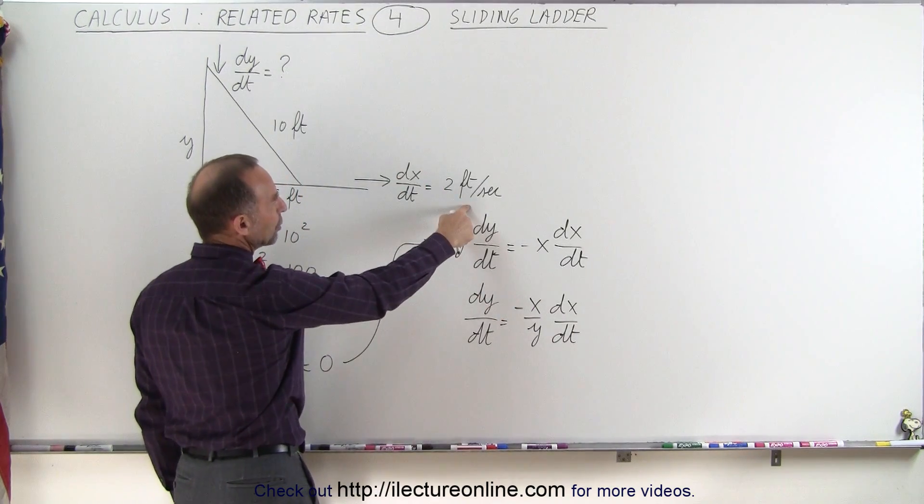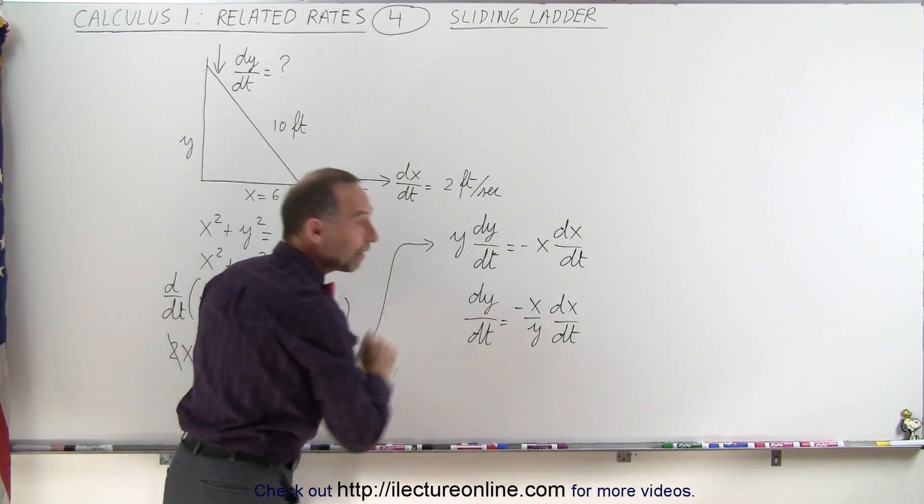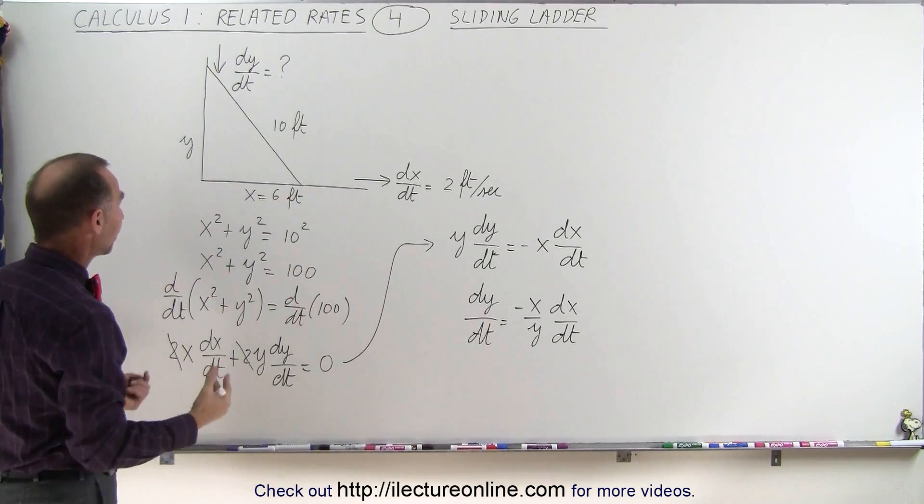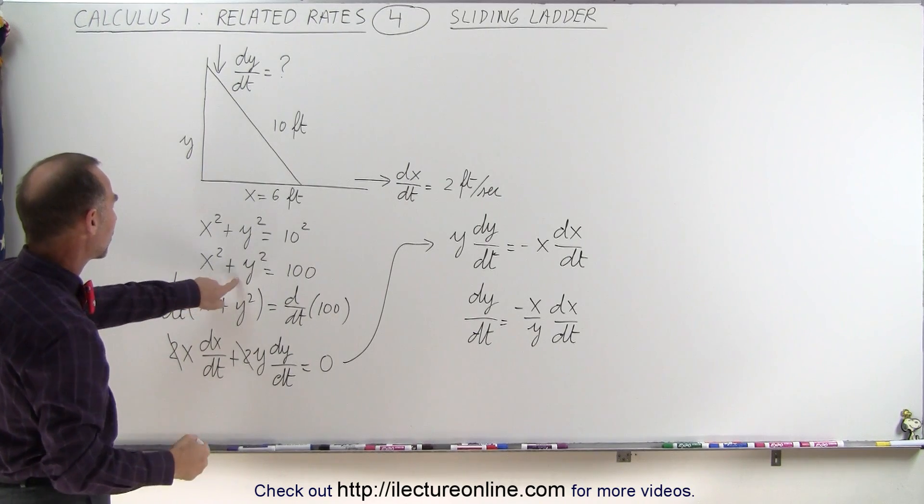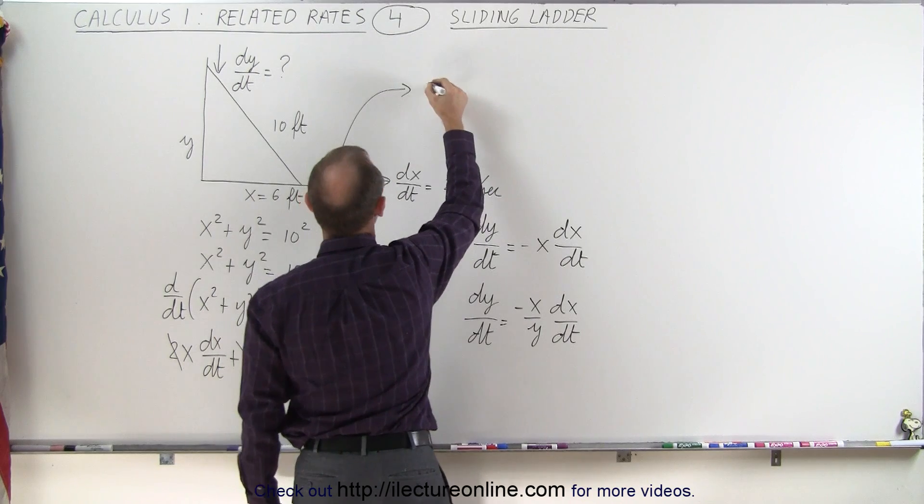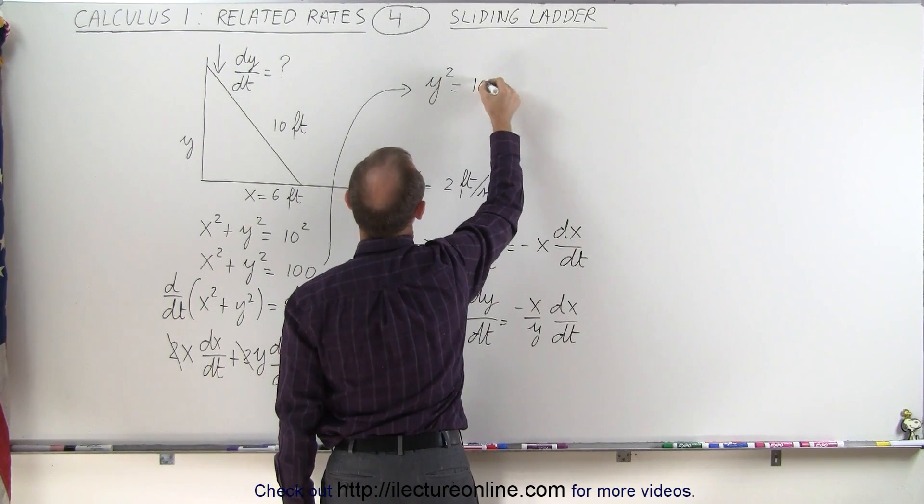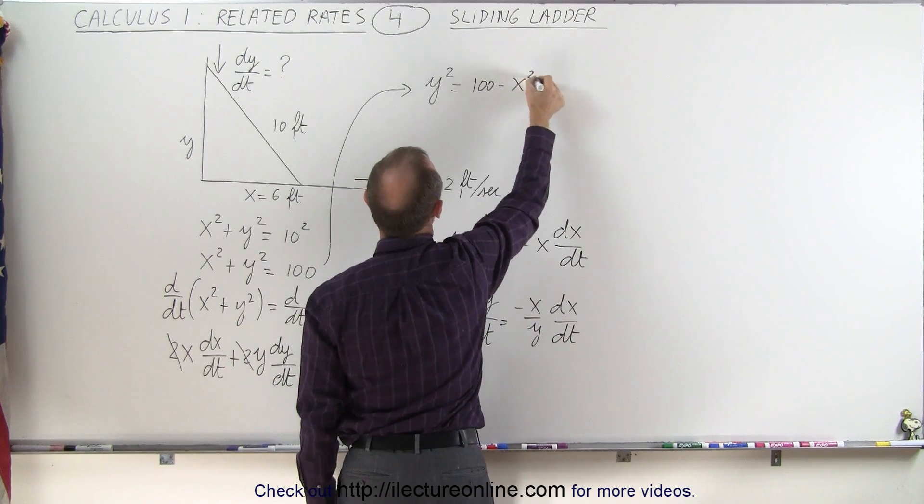Now dx/dt we know, and we're given the value for x, but we don't know the value for y yet. So we have to solve for that using Pythagorean theorem. We can say that y squared equals 100 minus x squared.